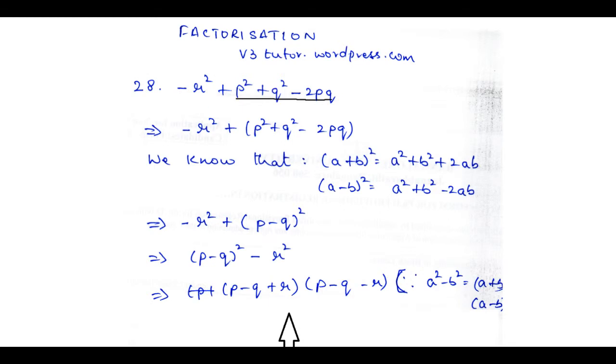So the main thing that you have to do is identify the identity, and this comes only by practice. Sometimes it is very obvious, but sometimes you have to apply your mind. In order to get sufficient practice, you can buy factorization workbooks from v3tutor.wordpress.com. Practice more problems like this and become a master of factorization by identifying the algebraic identity. We will go on to the next problem now.